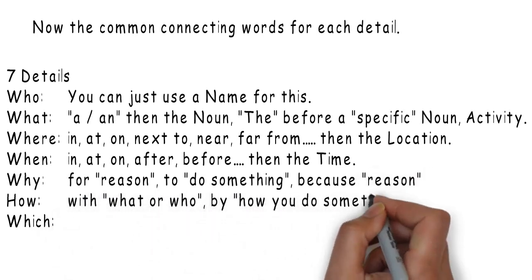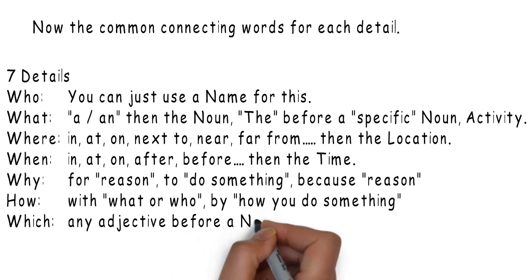Why – for, the reason. To – then do something. Because – and for a reason. How – with or who. By – how do you do something. Which – any adjective before a noun. Write these down and save them. They're very important.